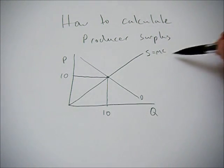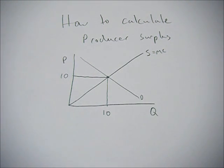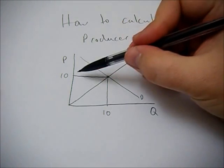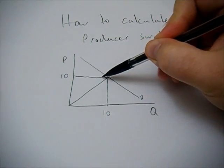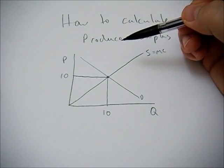And remember that the supply curve can also be called the marginal cost curve. Now why this is producer surplus is because this is the price that the firms are receiving, and they receive this price for every good that they sell.